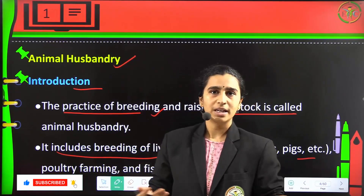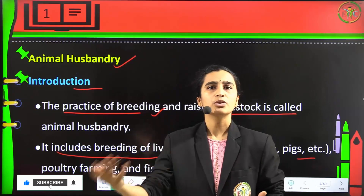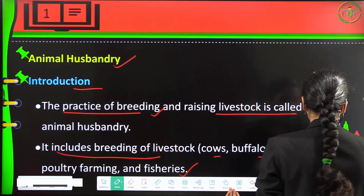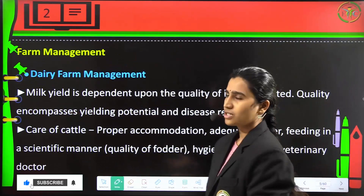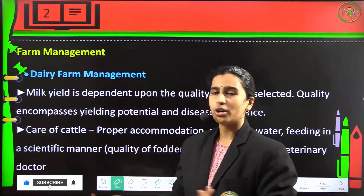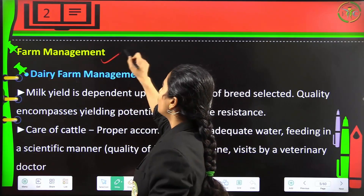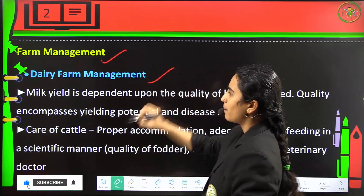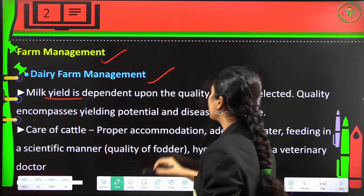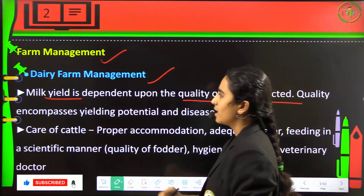We are crossbreeding many animals of the same breed in order to produce more enhanced animals, more production of milk, more production of poultry, or more production of eggs.